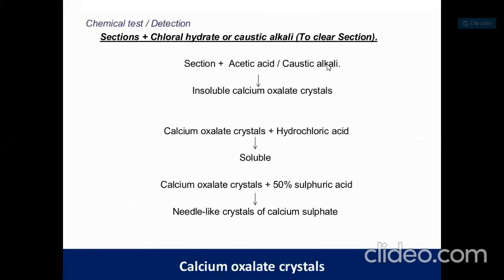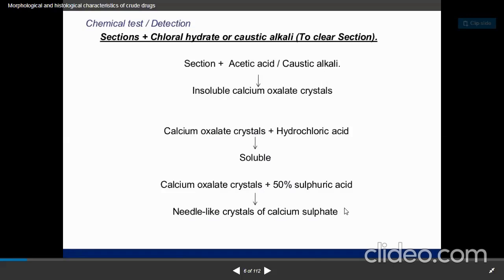To detect calcium oxalate crystals by chemical tests: sections are cleared with chloral hydrate and caustic alkali. Calcium oxalate crystals are insoluble in acetic acid and caustic alkali, but soluble in hydrochloric acid. With 50% sulfuric acid, needle-like crystals of calcium sulfate are produced. These reagent reactions indicate the type of crystals present and confirm whether they are there or not.